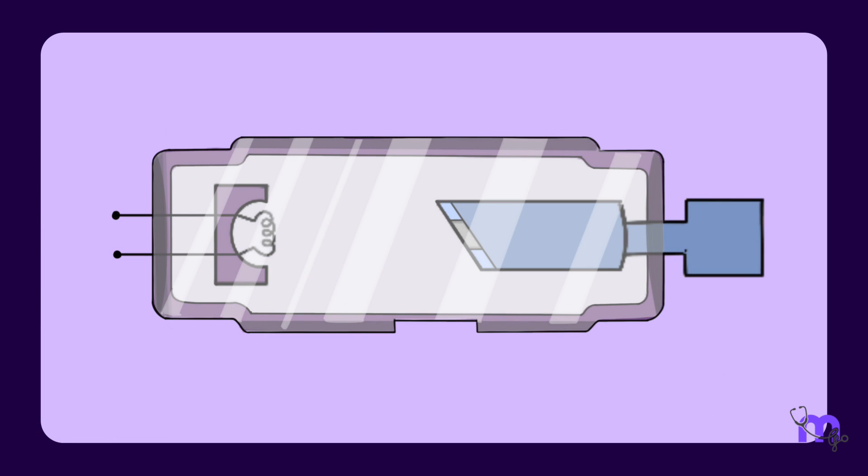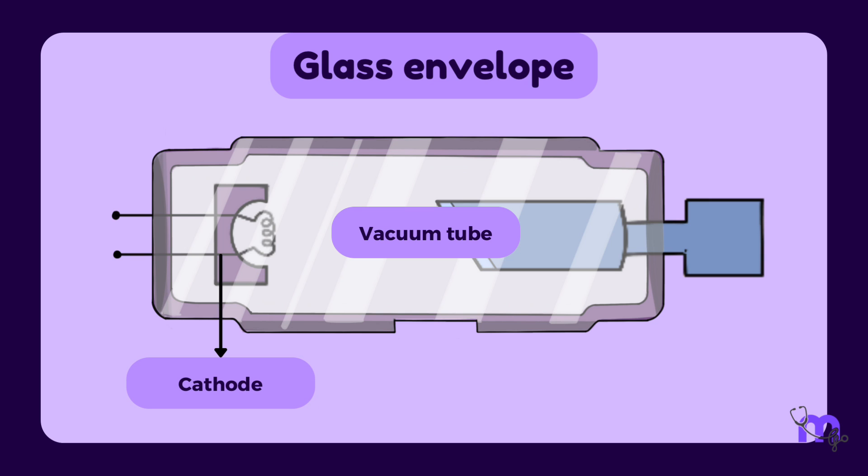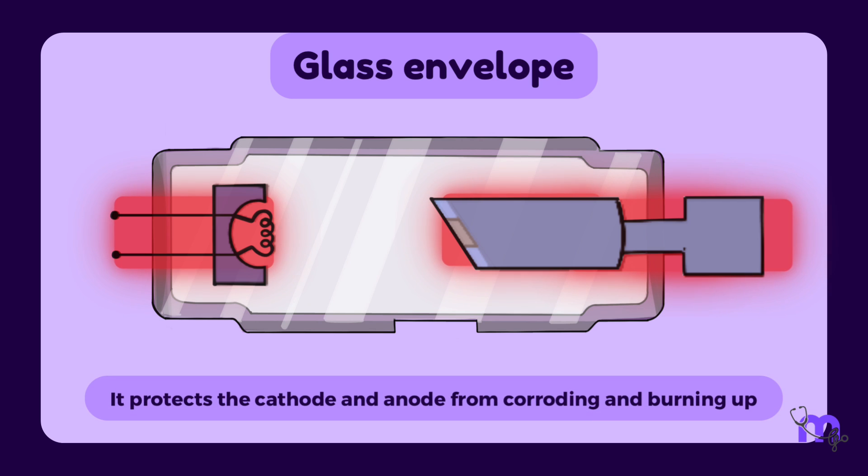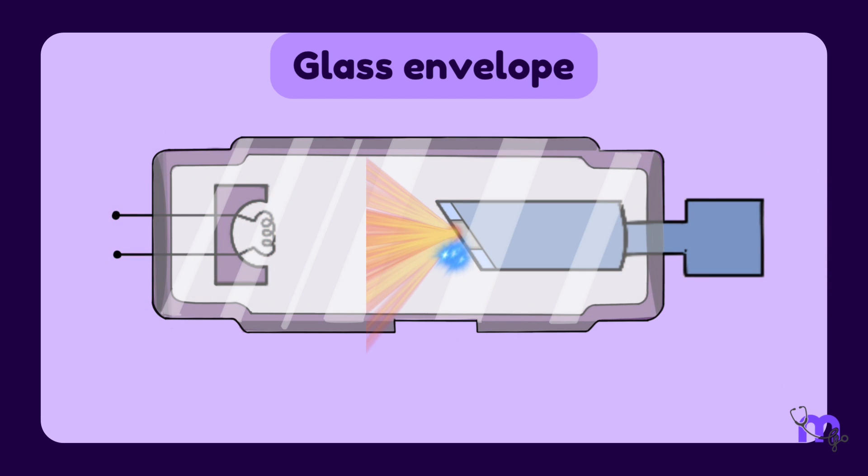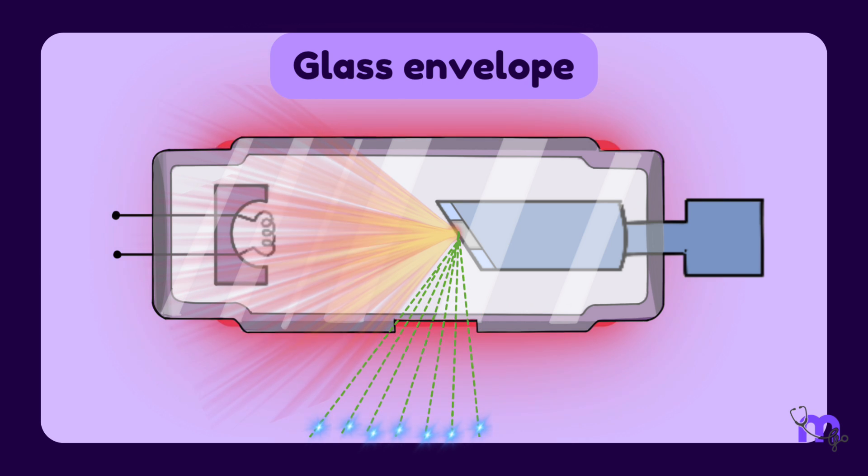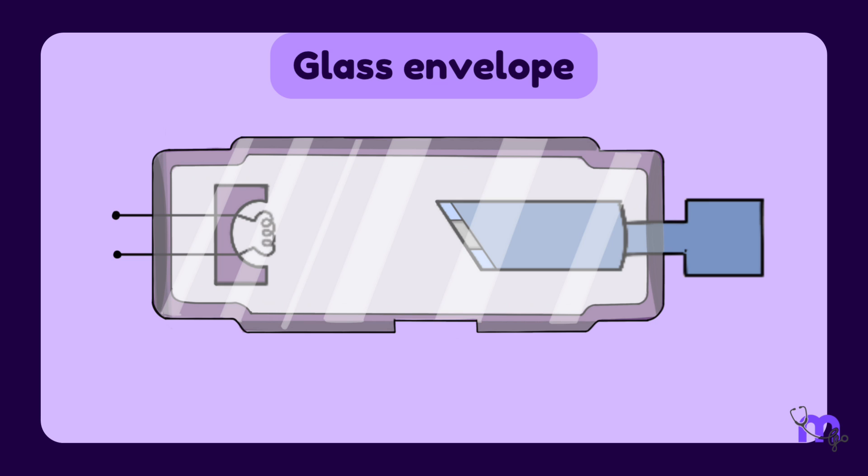The glass envelope is a vacuum tube that encases the cathode and the anode. It protects these elements from corroding and burning up when producing X-rays. The glass envelope heats up significantly, therefore it is made of a unique heat-tolerant material known as borosilicate glass, also known as Pyrex glass. The central area of the glass tube has a window through which the X-rays come out.